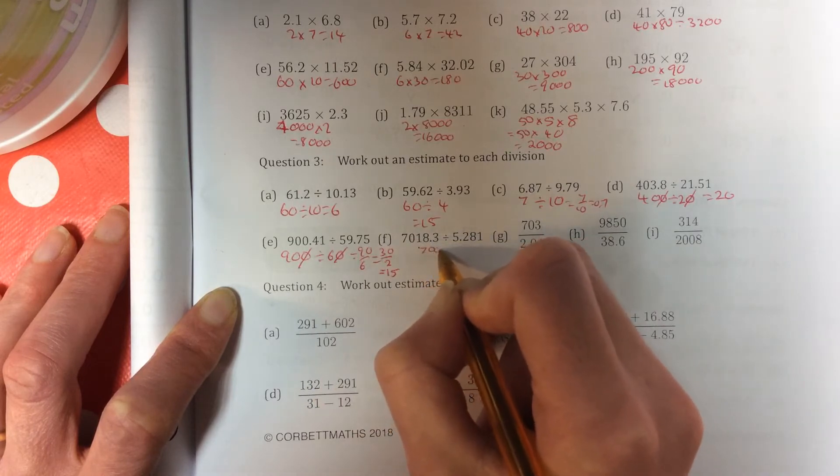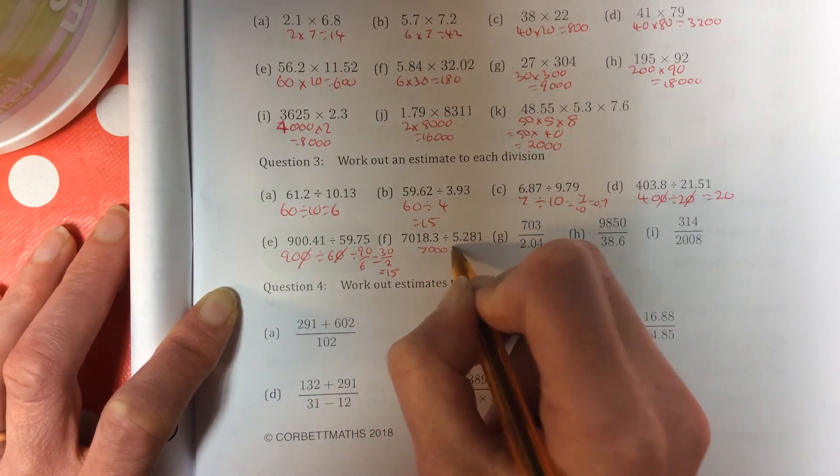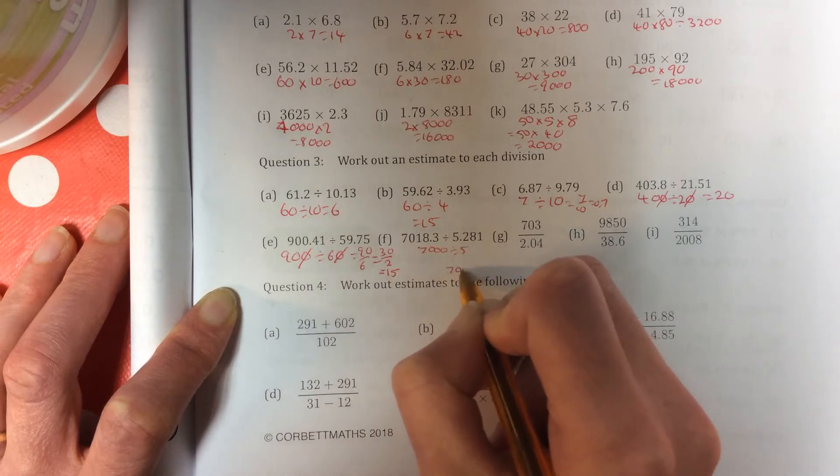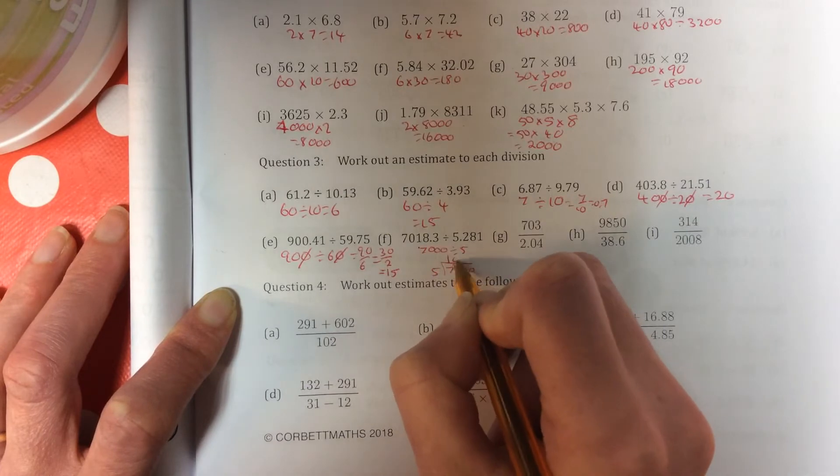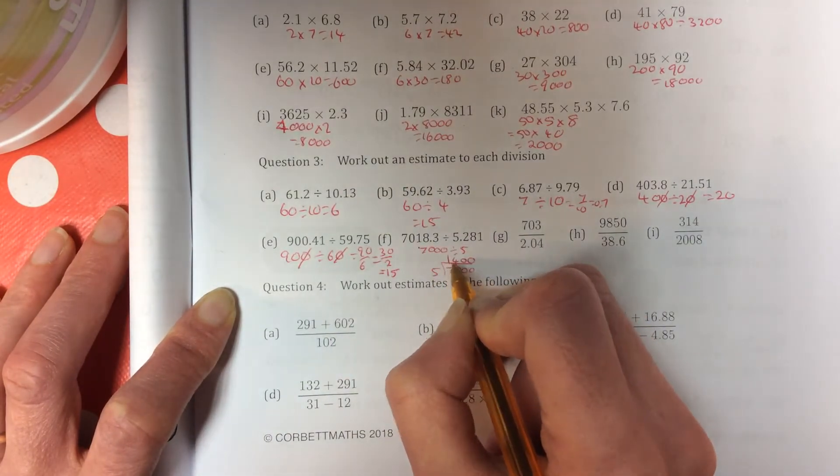This one is 7,000 divided by 5. So I'm just going to write that out as a sum. 7,000 divided by 5. 5 into 7 goes once, remainder 2. 5 into 20 goes 4 times, and 5 into nought, and 5 into nought. So your answer is 1,400.